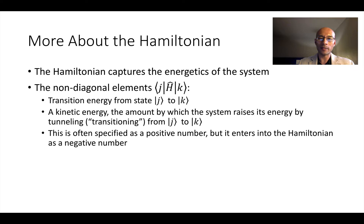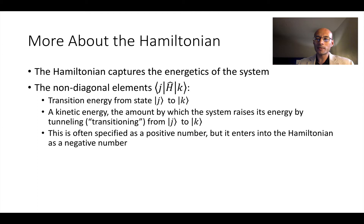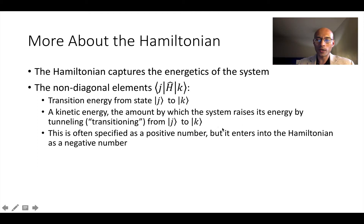Now let's talk about the off-diagonal elements. The non-diagonal elements j-H-k are transition energies from state j to state k. You can think of this as a kinetic energy — the amount by which the system can raise its energy by transitioning or tunneling from j to k. To make a tunneling event favorable, we actually want a negative value. So sometimes we refer to these as positive numbers, but usually we want them to enter into the Hamiltonian as a negative number, because we want the system to favor or support some kind of tunneling — it's going to want to lower its energy, so we want a negative tunneling energy.